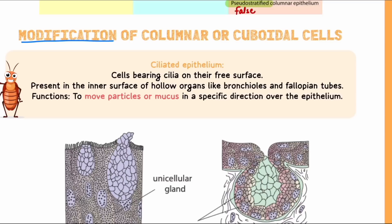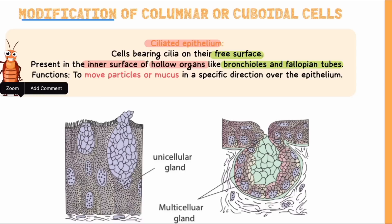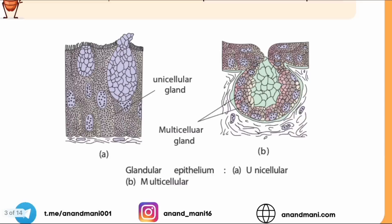In columnar and cuboidal epithelium we see some modifications — cilia may be present on the free surface. Such epithelium is called ciliated epithelium. Ciliated epithelium is mostly found on the inner surface of hollow organs. Two important examples are bronchioles and fallopian tubes, from which questions often come. Cilia help move particles in a particular direction — in bronchioles for dust movement, and in fallopian tubes for egg movement.